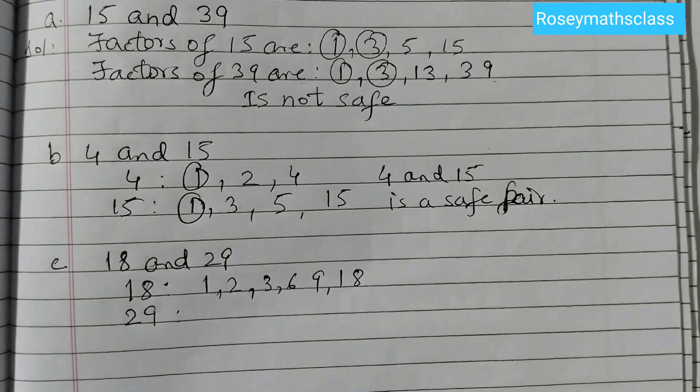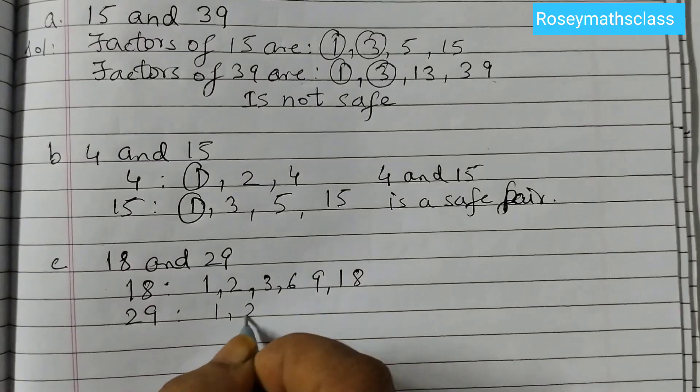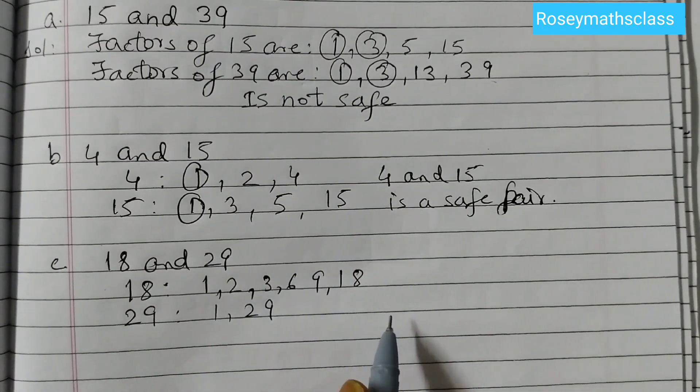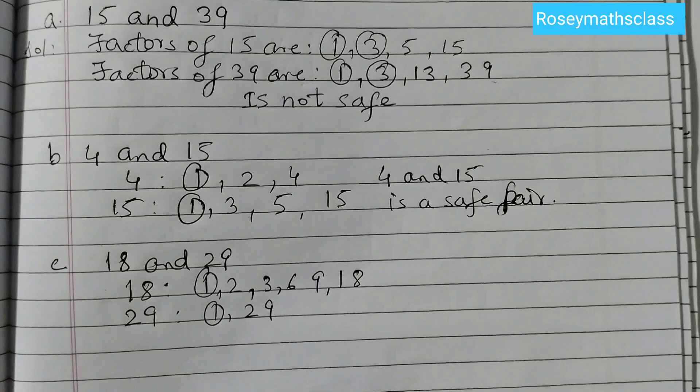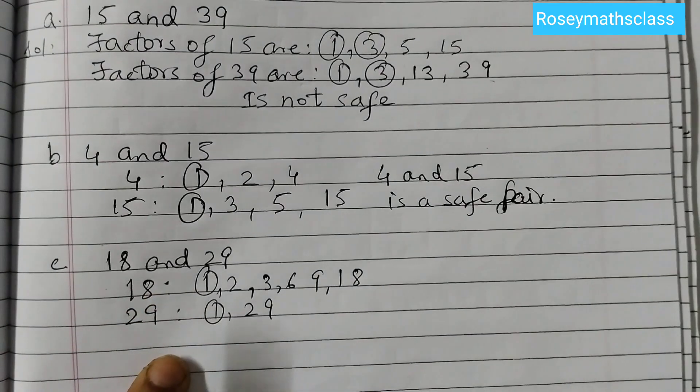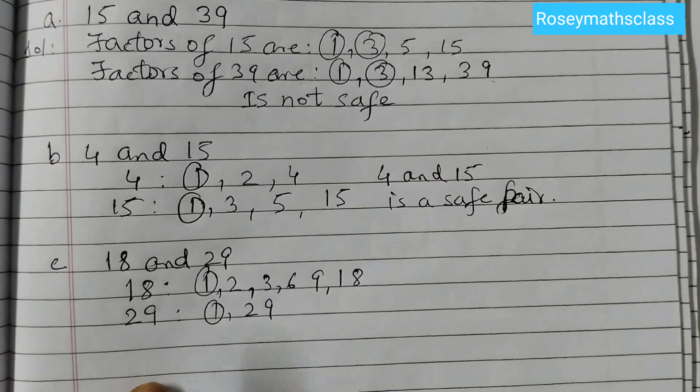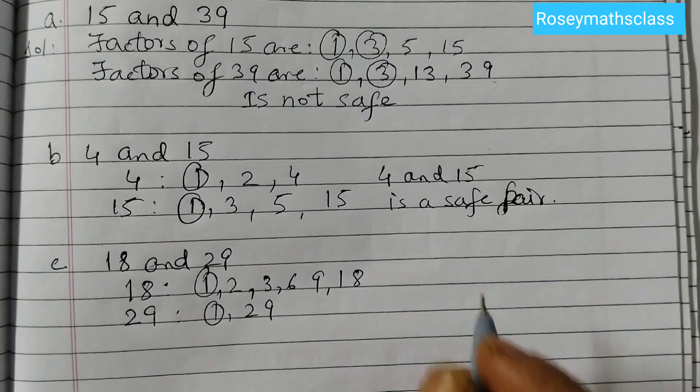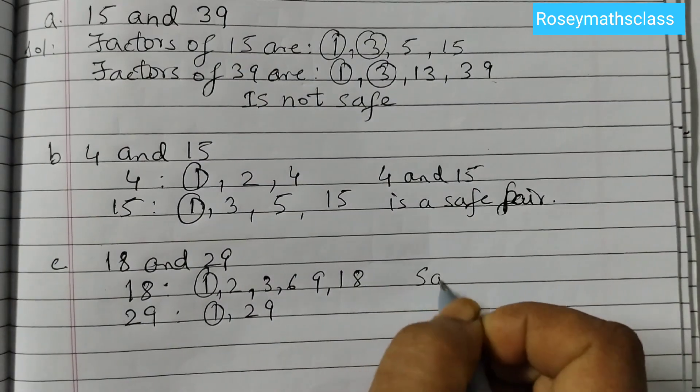29 is a prime number, so the only factors are 1 and 29. Now let's check the common factors. The common factor is just 1. That means 18 and 29 is a safe pair.